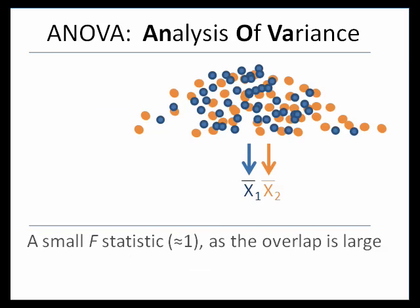If we have our treatment and our control group and there's a lot of overlap between the two groups with sample means fairly close together, we're going to get a small F-statistic around 1, which essentially means this is consistent with the null hypothesis — nothing is happening here.